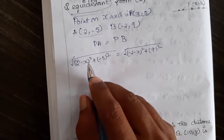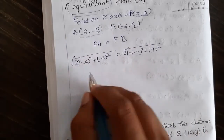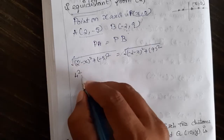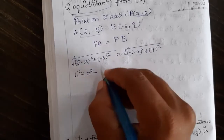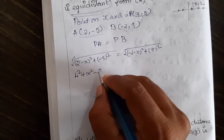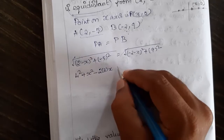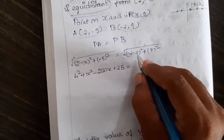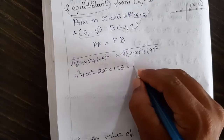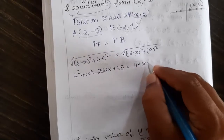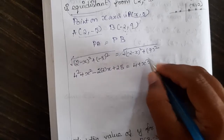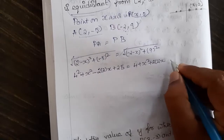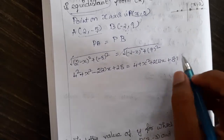We expand using the identities. 2² is 4, so we get x² minus 2×2×x = minus 4x, plus 5² which is 25. On the right side: (-2)² is 4, x² remains, and minus minus gives plus 2×2×x = plus 4x, plus 9² which is 81.